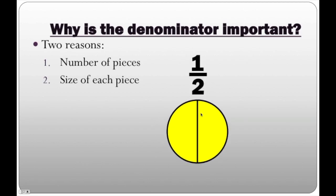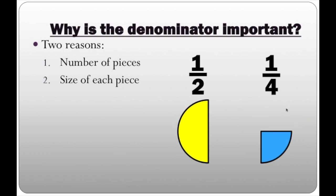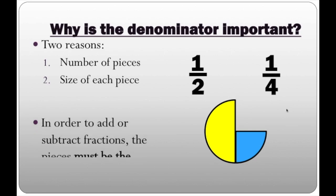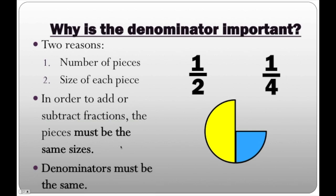We want to make one half — so this here is going to be one half. One fourth: here we have one whole, four out of four, and we want one fourth. Now if we try to put the two together, we can't add them, because we have to have pieces that are the same size. This here is one half, this here is one fourth, but they're not the same sizes, so we can't put them together. Because when we have denominators that are the same, we know that we have pieces that are the same sizes.